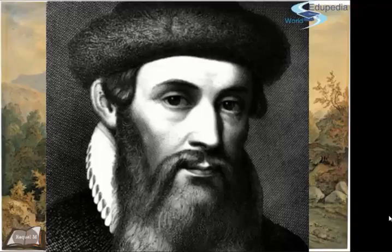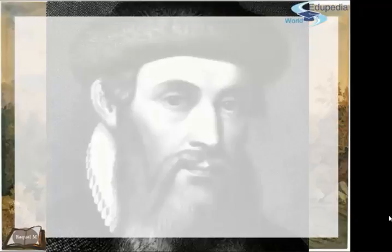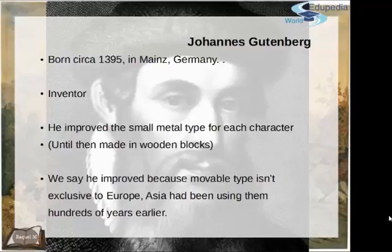This inventor changed the course of history. He gave us an enormous tool that would modify how society worked. This is Johannes Gutenberg, born circa 1395 in Mainz, Germany. He was the third son from a merchant family. He did impact the course of history with his inventions. He was kind of obsessed with the printer. What he did at the start was improve the small metal type for each character.